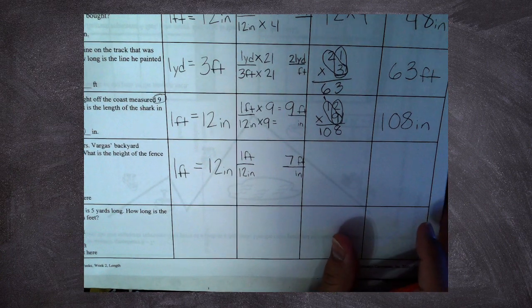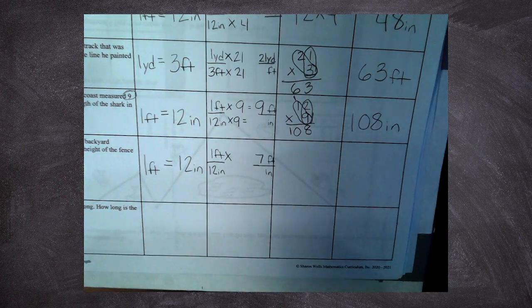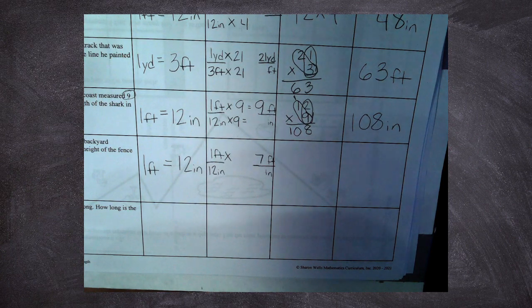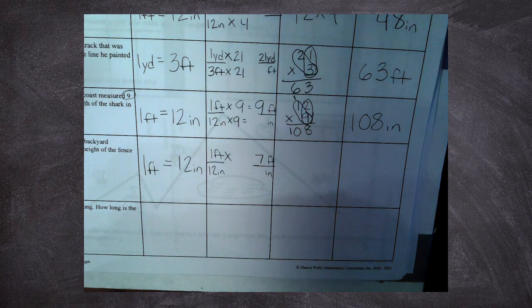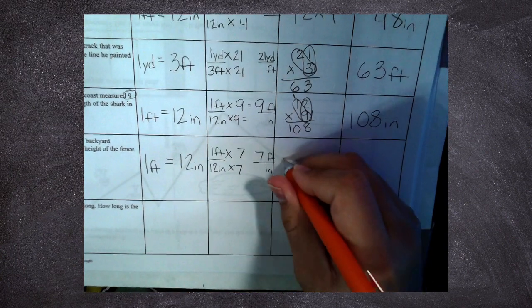I could use multiplication. Who could tell me what number would I multiply? One times what? Alexa? One times seven. One times seven, which means I have to multiply twelve times seven.